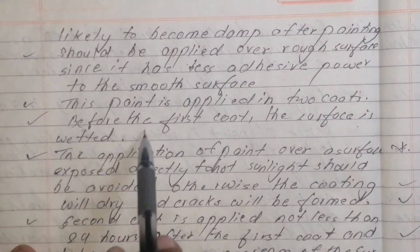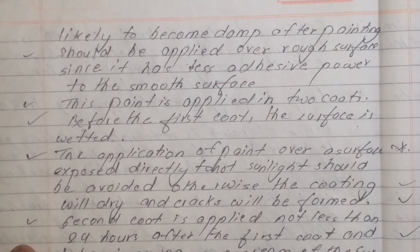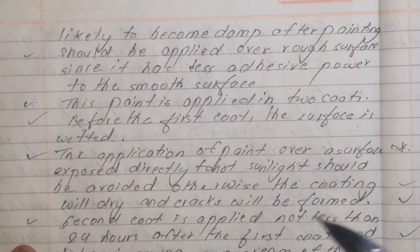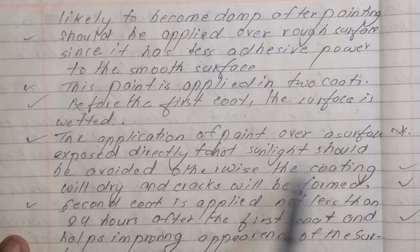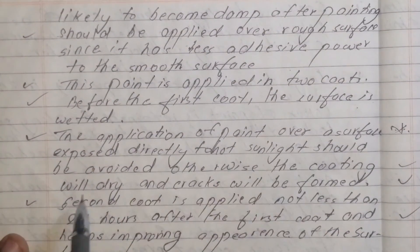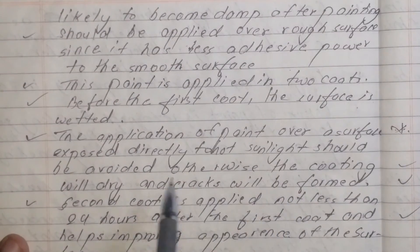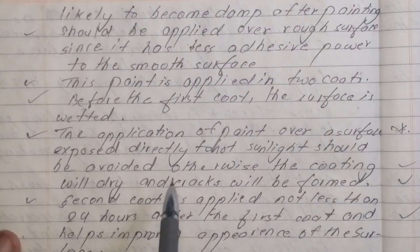This paint is applied in two coats. Before the first coat, the surface must be wetted. Cement paint will be long lasting. The application of paint over surfaces exposed directly to hot sunlight should be avoided; otherwise, the coating will dry too fast and cracks will be formed.